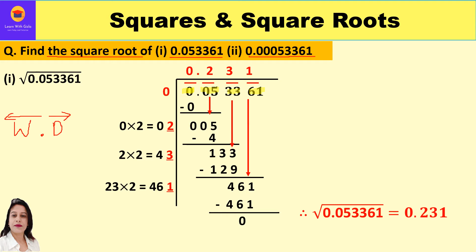Now we start the long division process with the first period, which is 0. We need to think of the largest number whose square is either equal to or less than 0. Clearly, 0 × 0 = 0, so the divisor is 0, the quotient is 0. 0 minus 0 is 0. Bring down the next period, which is 05. Since 05 is after the decimal point, we put a decimal point in the quotient after 0, indicating the whole number part is complete.